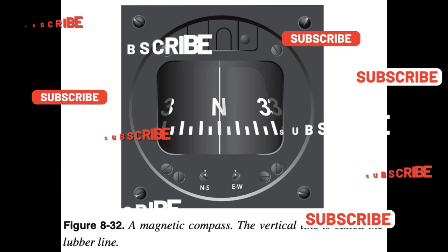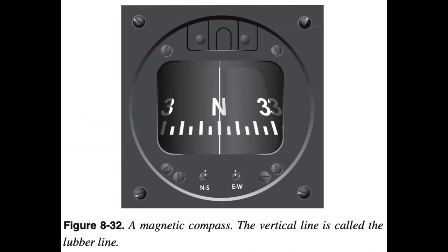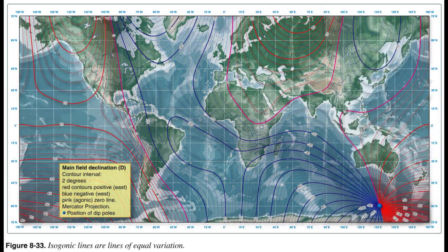The magnetic compass is the simplest instrument in the panel, but it is subject to a number of errors that must be considered. The Earth rotates about its geographic axis, and maps and charts are drawn using meridians of longitude that pass through the geographic poles. Directions measured from the geographic poles are called true directions. The magnetic north pole to which the magnetic compass points is not collocated with the geographic north pole, but is some 1,300 miles away. Directions measured from the magnetic poles are called magnetic directions. In aerial navigation, the difference between true and magnetic directions is called variation. This same angular difference in surveying and land navigation is called declination.